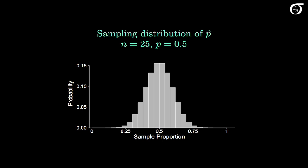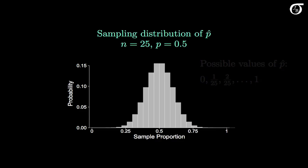Here's the exact sampling distribution of P-hat when n is 25 and P is 0.5 — it's just the binomial distribution with a rescaled x-axis. P-hat can take on one of 26 possible values: 0, 1 over 25, 2 over 25, all the way up through 1. The sampling distribution is centered at P = 0.5, and when P equals 0.5, the distribution is perfectly symmetric. If we superimpose a normal curve with the appropriate mean and standard deviation, we can see that the normal distribution closely approximates it, even with a sample size of only 25.